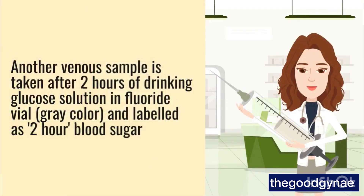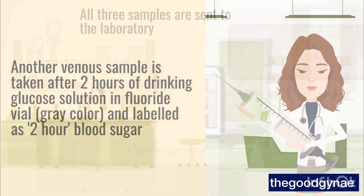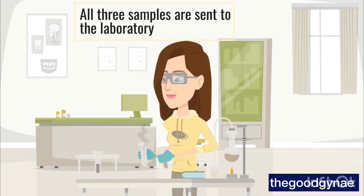Another venous sample is taken after 2 hours of drinking the glucose solution in a fluoride vial, gray color, and labeled as 2 hour blood sugar. All three samples are sent to the laboratory.